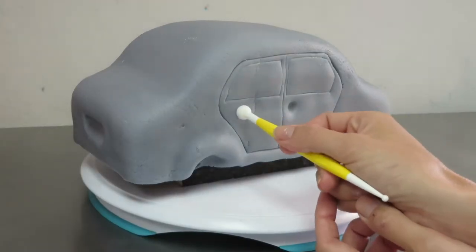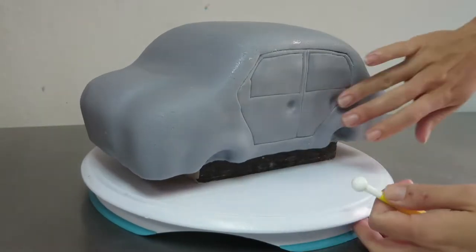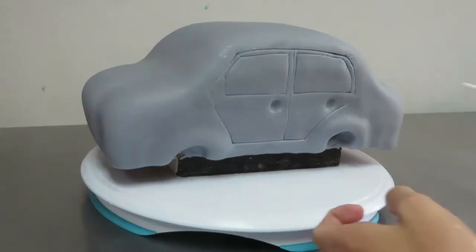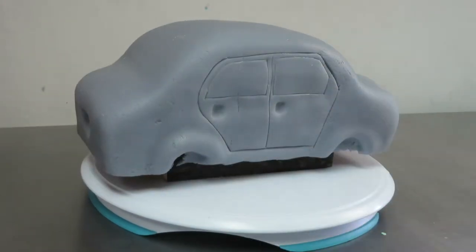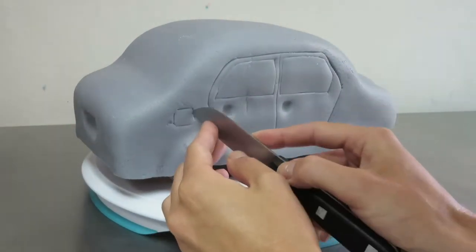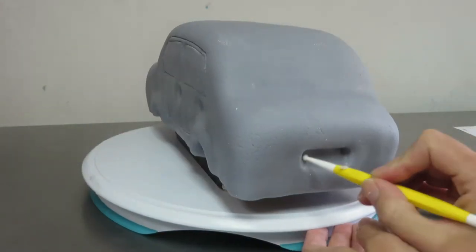The ball tool is great for making the indents where the door handles go. Use the big ball to make the initial indent and then the small ball to press the corners out. This square is for the petrol tank door and this indentation is for the license plate.